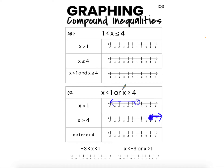Solutions to the compound inequality are either in the region less than 1 or in the region greater than or equal to 4. So the graph of this compound inequality is simply the graph of x is less than 1 and the graph of x is greater than or equal to 4 on the same number line, representing all numbers that are either less than 1 or greater than or equal to 4. This is the final graph, and the AND compound inequality is a little more complicated.